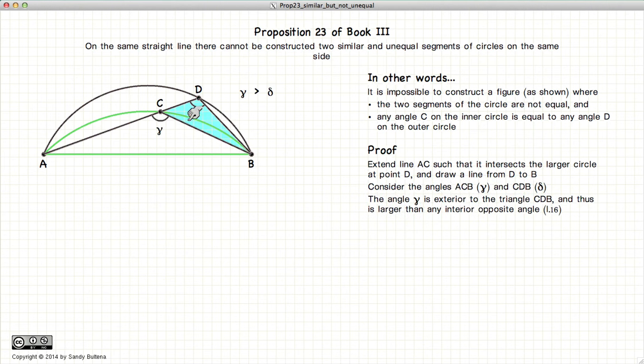If we look at our triangle CDB, according to Proposition 16 of Book 1, the exterior angle of any triangle is always larger than the opposite and interior angle. So gamma is larger than delta.